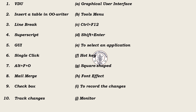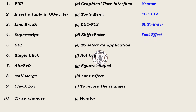Answers: 1. VDU – Visual display unit, that is Monitor. 2. Insert a table in OpenOffice Writer – Ctrl plus F12. 3. Line break – Shift plus Enter. 4. Superscript – Font effect. 5. GUI – Graphical user interface.